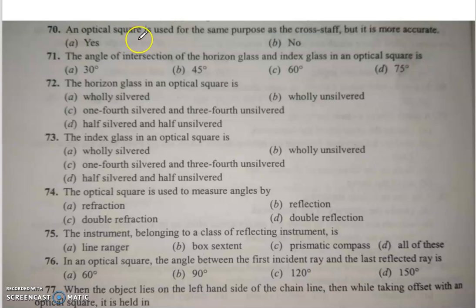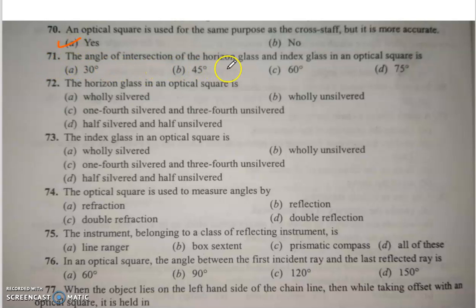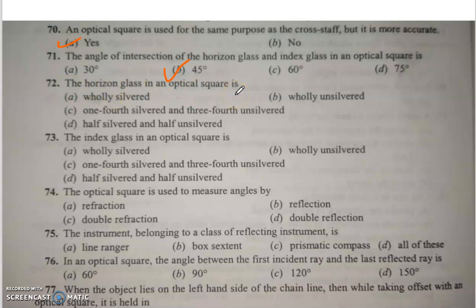Q70: An optical square is used for the same purpose as the cross staff but it is more accurate — answer is correct. Q71: The angle of intersection of the horizon glass and index glass in an optical square is 45 degrees. Q72: The horizon glass in an optical square is half-silvered and half-unsilvered.